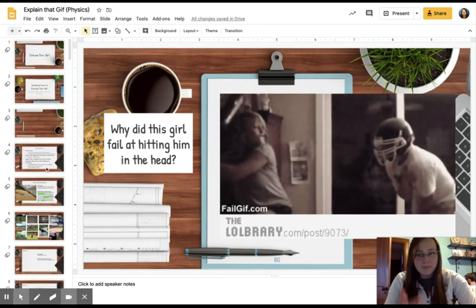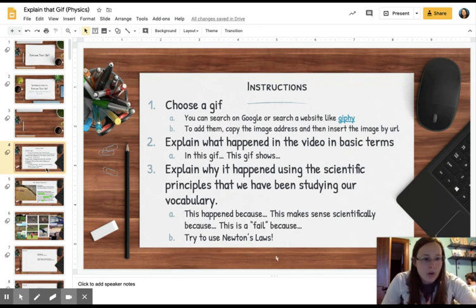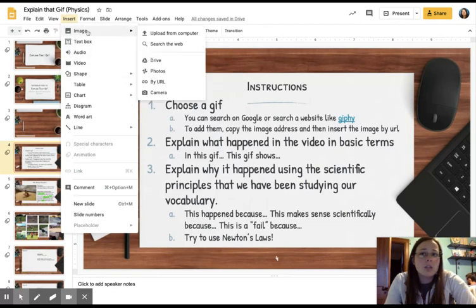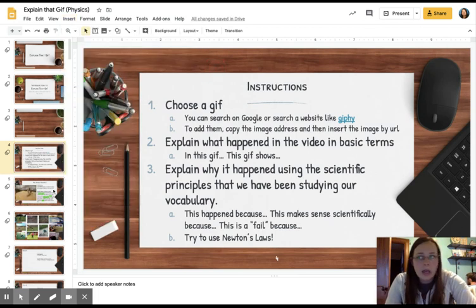Which brings us to what we're actually going to do. So tomorrow, you'll actually go through and do this on your own. I wanted to give you a day where we reviewed some of the concepts, and then you can obviously look through my example and know what you're going to do, and then tomorrow you'll actually do your own. If you'd like to work ahead, obviously you're welcome to. But you do not need to. So step number one is to choose a GIF. You can search on Google, putting GIF at the end of it, or searching a website like Giphy. I have it linked here. You can click on it. And then to add them, you copy the image address and insert it by URL. When you go to insert your image, you can actually say by URL, and you copy and paste that website link. It's similar on an iPad, and I will actually put in a video of how to do that as well.